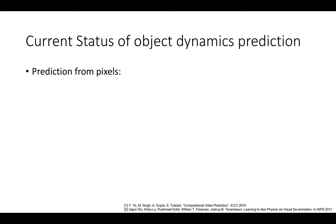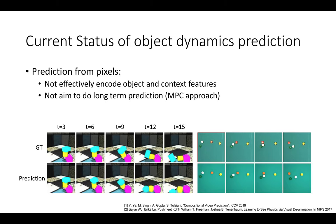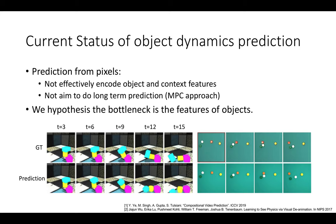Let's look at the current status of object dynamic prediction. There are already works on learning predictions from pixels in the intuitive physics community. However, many of these methods do not have an efficient or effective way to encode object feature representations. For example, works on predicting block falling and billiard physics do not have object feature representations that encode context information. We hypothesize that this limitation prevents the model from predicting very long-term interaction, and that learning a good representation for each object is key to long-range prediction.